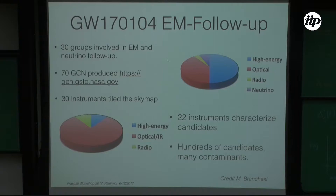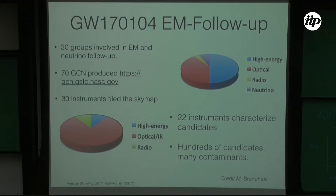From O1 and O2, 30 groups were involved in electromagnetic and neutrino follow-up, with 22 instruments characterizing candidates, 100 candidates, and many contaminants — a lot of lessons were learned. For O2, our collaboration had secured target-of-opportunity telescopes in the Canary Islands, a big telescope in Mexico, one in La Serena in Chile, and another telescope operated by Brazilian scientists. The main telescope we used was the T80-South, built by Brazilian astronomers.